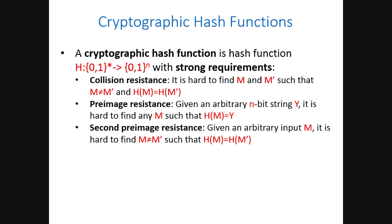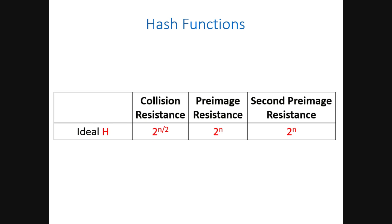Second pre-image resistance: we are given an arbitrary input message m, and our goal is to find another message m' that maps to the same value under the hash function. When we model the hash function as an ideal function, the concrete security for these three requirements are 2^(n/2) for collision resistance, essentially because of the birthday paradox, and 2^n for pre-image and second pre-image resistance.